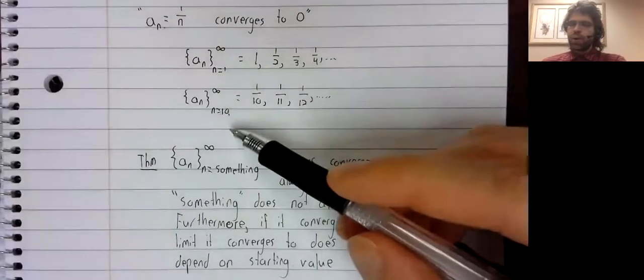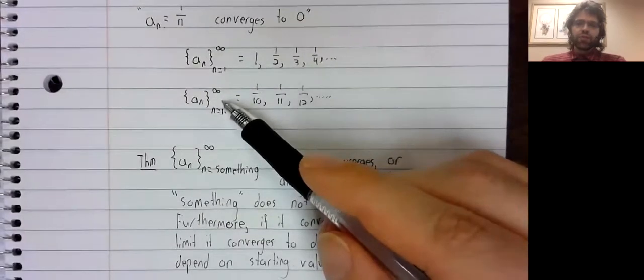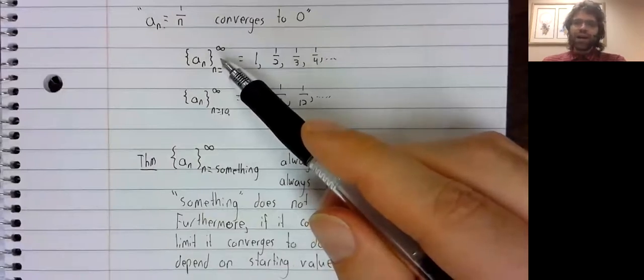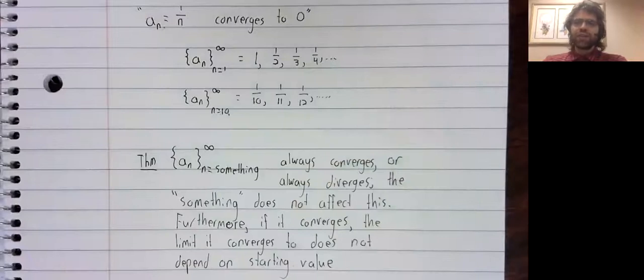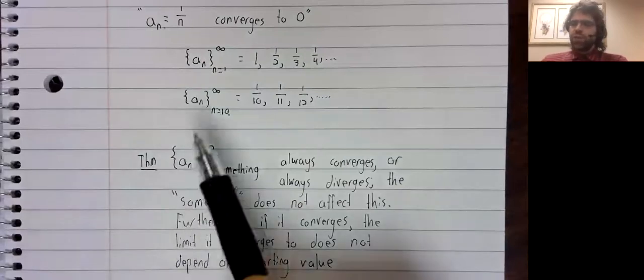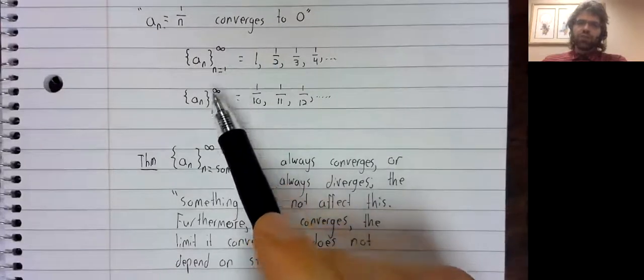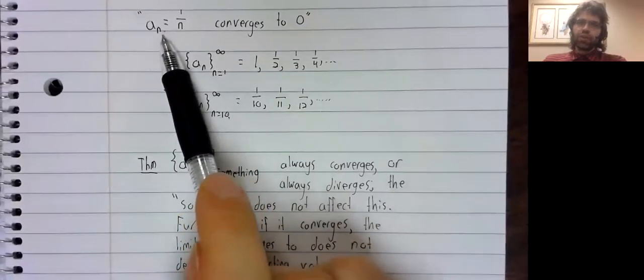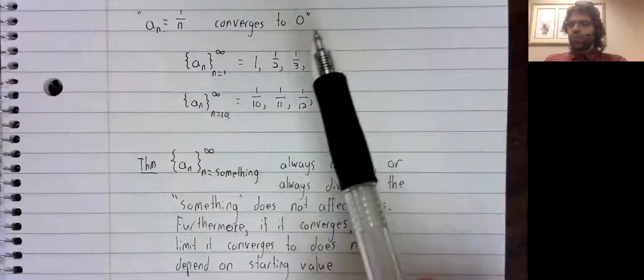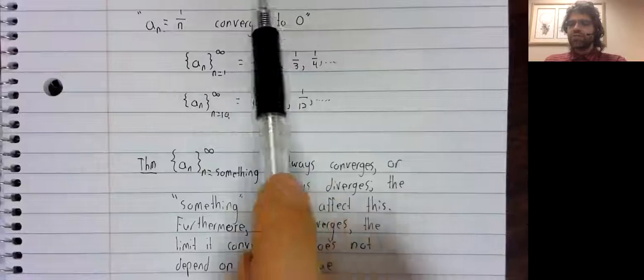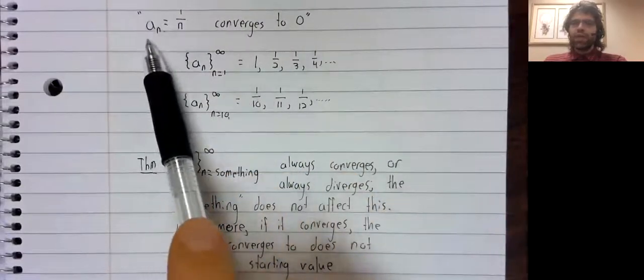So for discussing the convergence or divergence of a sequence, where we start doesn't matter. The only thing that matters is this formula. And that's why we feel free to write things like this, even if it is a little informal.